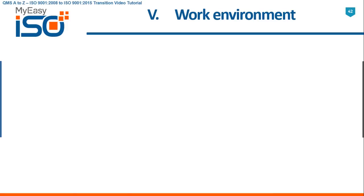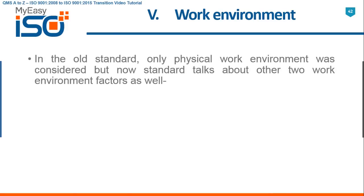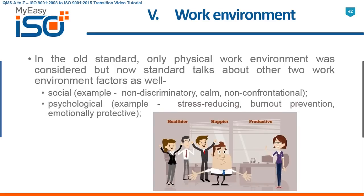V. Work Environment. In the old standard, only the physical work environment was considered. But now, the standard talks about two other work environment factors as well: Social — for example, non-discriminatory, calm, and non-confrontational; and Psychological — for example, stress-reducing, burnout prevention, and emotionally protective.